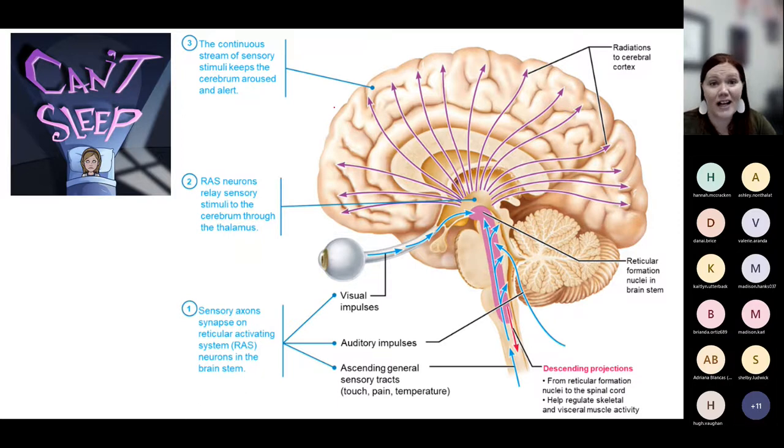Remember that we get a lot of kinds of sensory information that goes into the reticular activating system. We get information from things that we see, for example, the sunlight helping us to know that it's still daytime, we should still be awake. We get information from what we hear, for example, when you hear your alarm go off in the morning, it should wake you up.